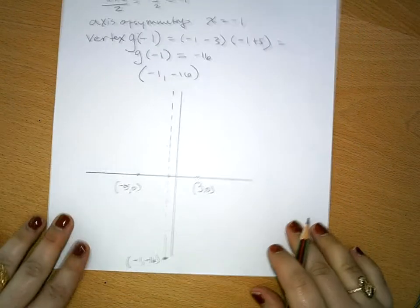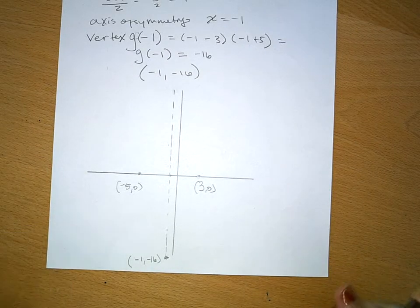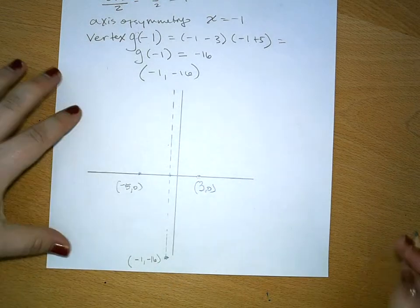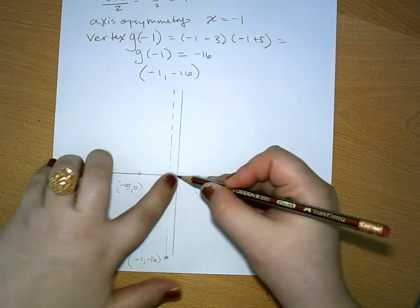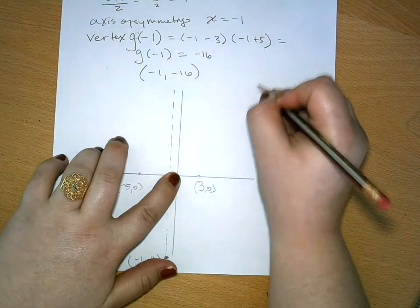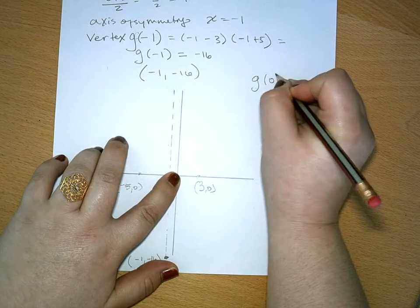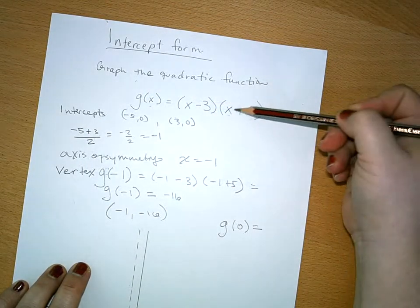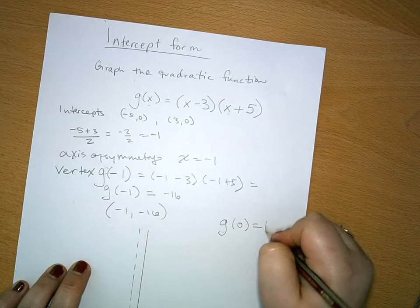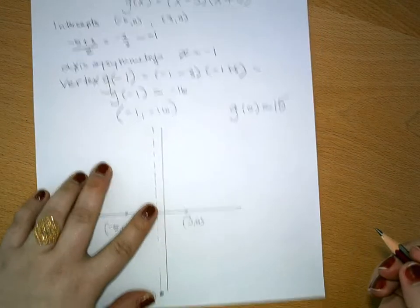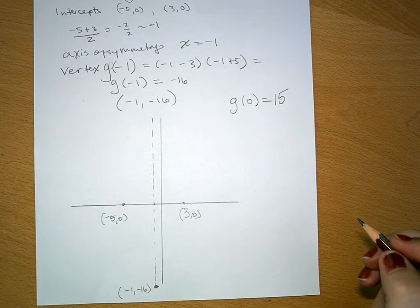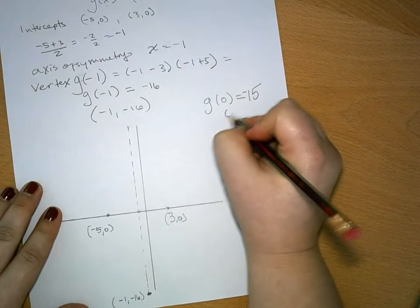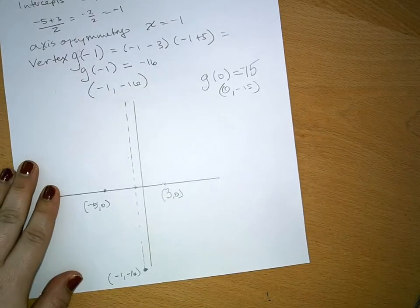Now, finding two other coordinates, because we really want four other coordinates other than the vertex. So let's choose 0. That's really easy to put in. So what is g of 0? 0 minus 3 is negative 3, 0 plus 5 is 5, negative 3 times 5 is negative 15. So we have one coordinate that is 0, negative 15.